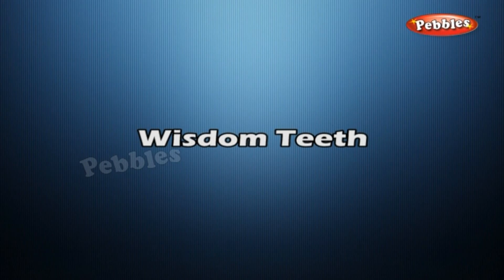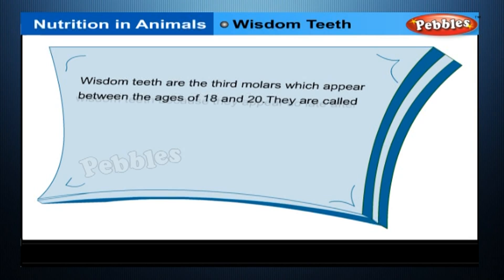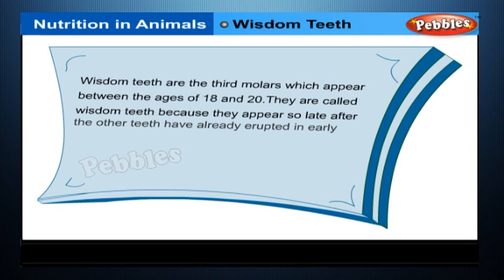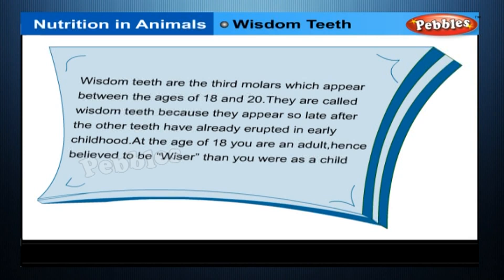Wisdom Teeth. Wisdom teeth are the third molars which appear between the ages of 18 and 20. They are called wisdom teeth because they appear so late, after the other teeth have already erupted in early childhood. At the age of 18, you are an adult and hence believed to be wiser than you were as a child.